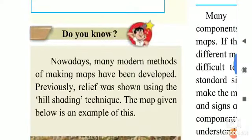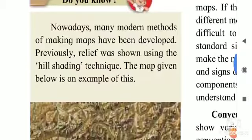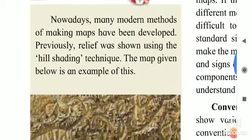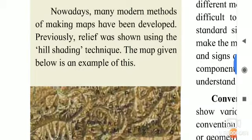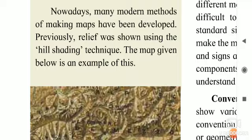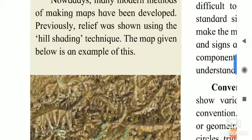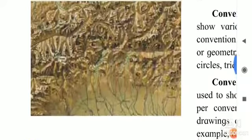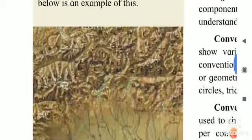Do you know? क्या तुम जानते हो? Now a days, many modern methods of making maps have been developed. मैप तयार करने की अनेक modern methods अब विकसित हो गई हैं. Previously, relief was shown using the hill shading technique. Hill shading मतलब प्रकाश छाया इस पद्धती का उपयोग करके map तयार किये जाते थे. The map given below is an example of this — नीचे दिया गया map इसका example है.